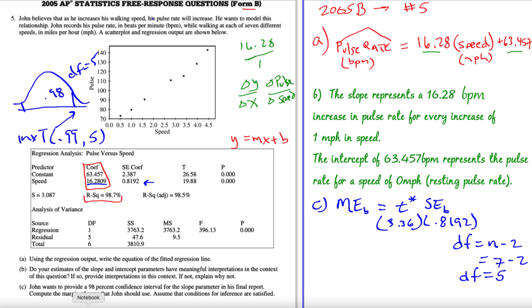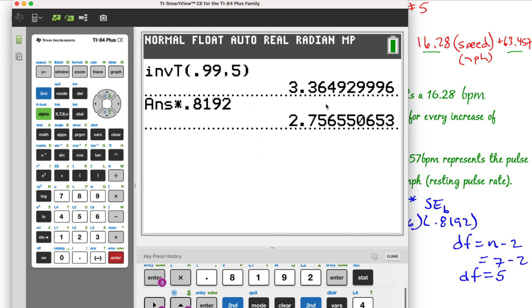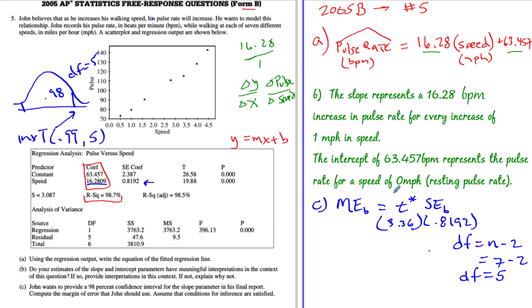3.36. So I'm going to multiply that times 0.8192. That seems like a calculator job as well. And we will get 2.756. Let's round that up 2.757. So the margin error for B would be 2.757. And we're estimating B. Remember, B is the slope, which is pulse rate. All right, so it'd be beats per minute per mile per hour. That's a lot of pers. So there is our final answer there.